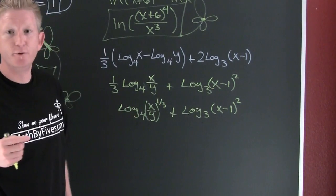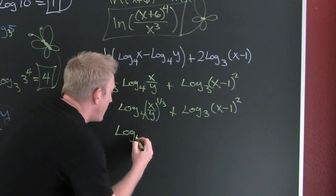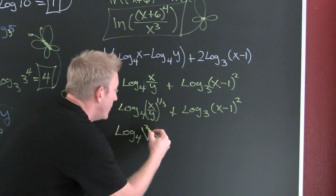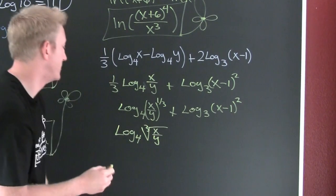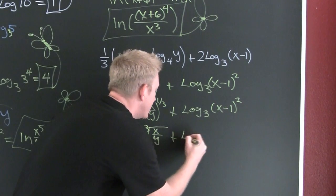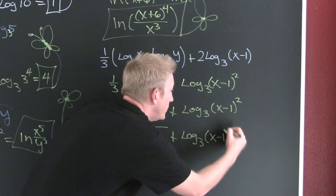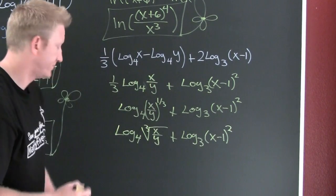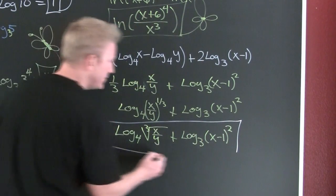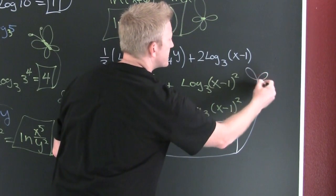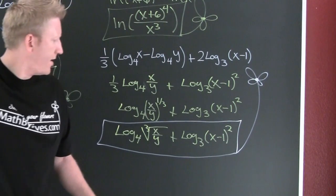But I do like my friend Rudy. So let me go ahead and finish this off with a log base four of the third root of x over y plus log base three x minus one squared. And we're there. A box. And a flower.